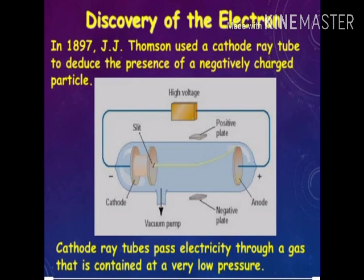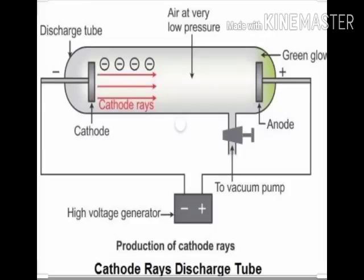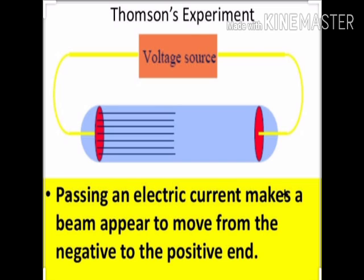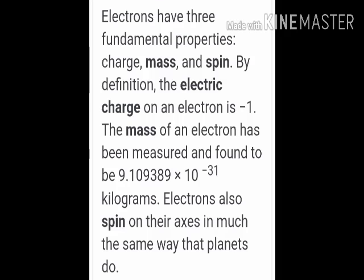Discovery of electron: In 1897, J.J. Thomson used a cathode ray tube to deduce the presence of negatively charged particles. Cathode ray tubes pass electricity through a gas that is at very low pressure, and a high voltage is adjusted between the two terminals as you can see in the diagram. The beam of rays is known as cathode rays, and cathode rays come from cathode to anode. These are properties of electrons: they have three fundamental properties of charge, mass and spin.